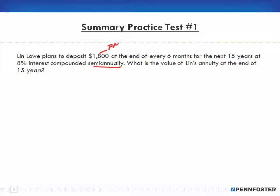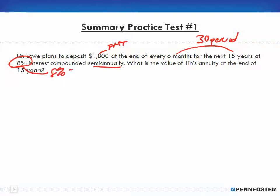It's every six months for the next 15 years, so that's 30 periods. And it's 8% interest compounded semi-annually, so 8% divided by 2 is 4% interest. We're going to be using 30 periods at 4% interest.